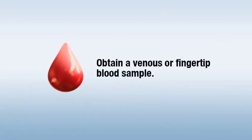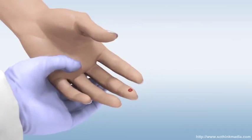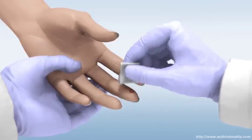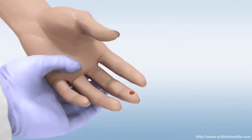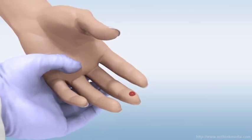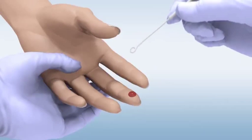Obtain a venous or fingertip blood sample according to your normal laboratory practices. If you're taking a sample from a fingertip, wipe away the first drop of blood after pricking the finger and sample from the second drop.